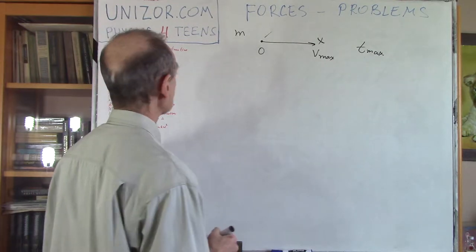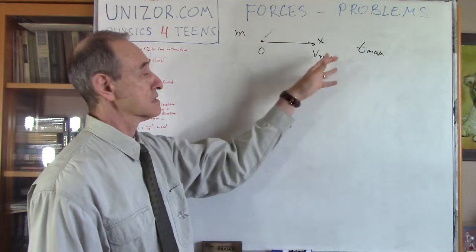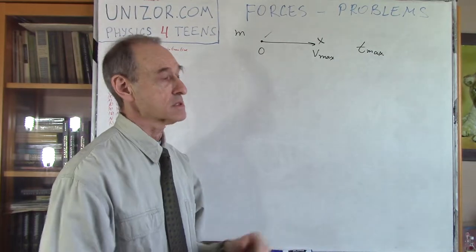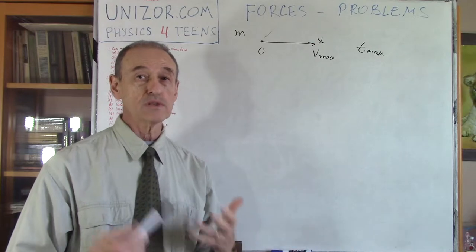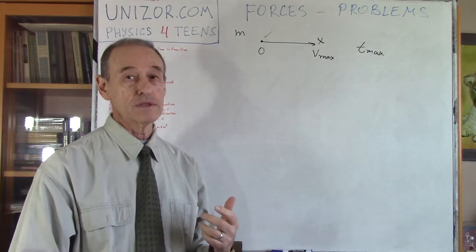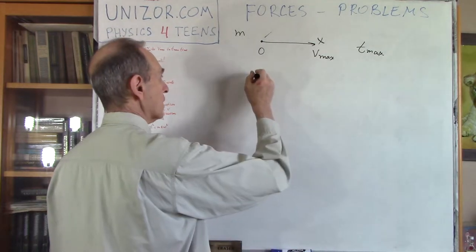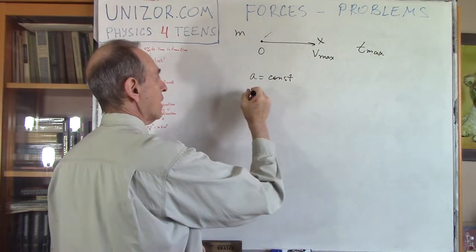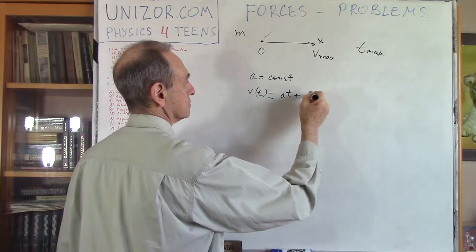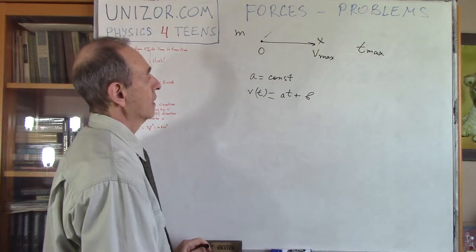The second question is: what is the acceleration? Acceleration is a vector, but in this particular case this vector will have only an x-coordinate because y and z coordinates will always be zero — we are moving along the x-axis. I said that the acceleration is supposed to be constant. If acceleration is constant, acceleration is the derivative of the velocity. So if acceleration a is constant, it means that velocity as a function of time is supposed to be a linear function. That's the only function whose derivative is equal to a, as we know from calculus.